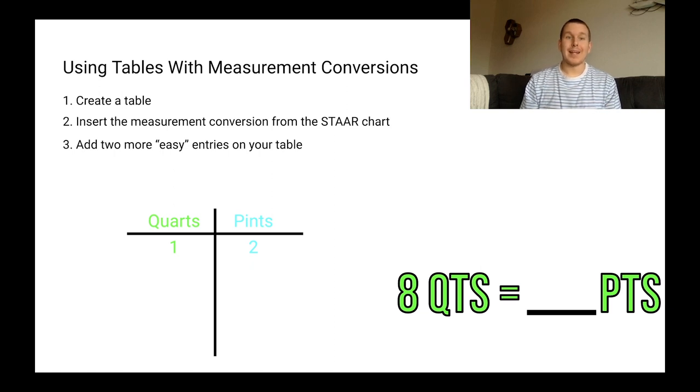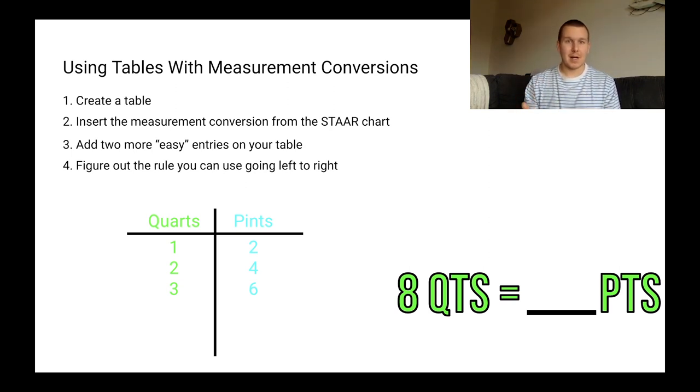Step three, add two more easy entries on your table. So I typically like to just go up by one. So two quarts would have four pints, and three quarts would have six pints. I know these numbers don't really help us get the exact answer we're looking for, but then we can start looking at a pattern and develop what we're going to do to help us find out what the answer is. Step four, figure out the rule you're going to use from left to right. So it looks like as we go from the left side of the table to the right side of the table, we're going to be multiplying by two.